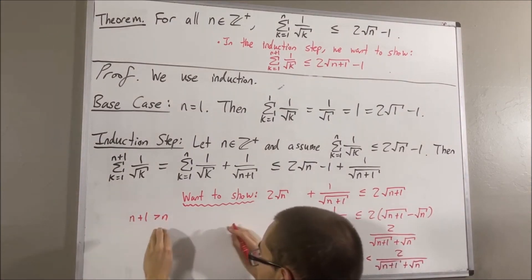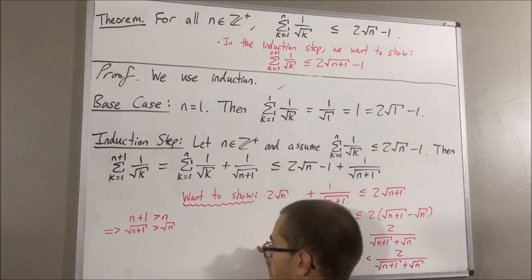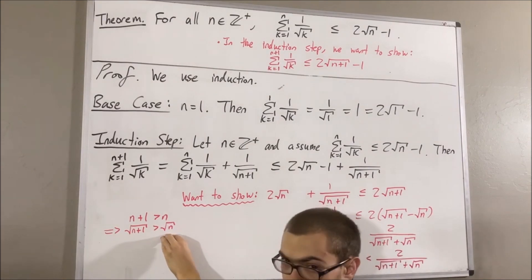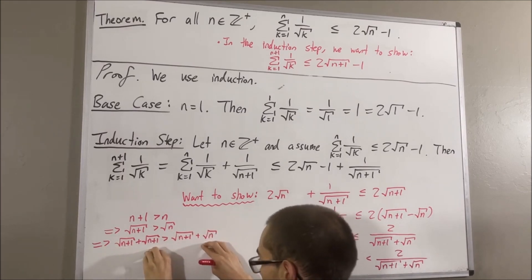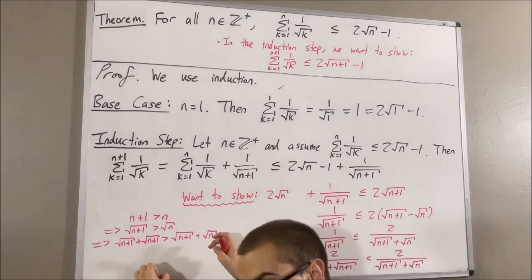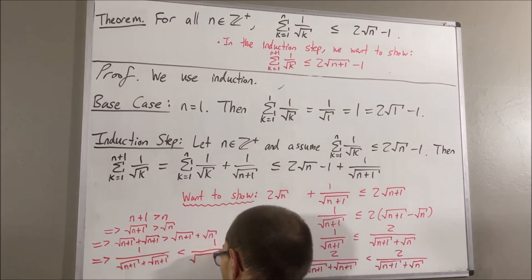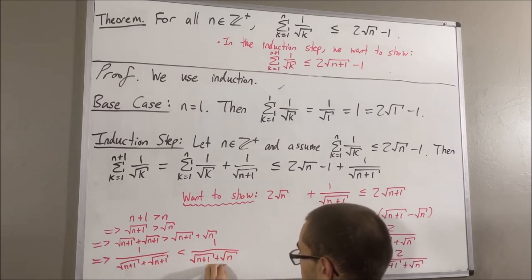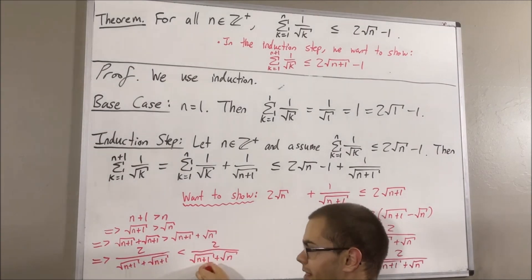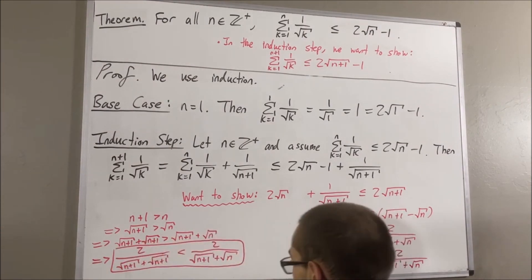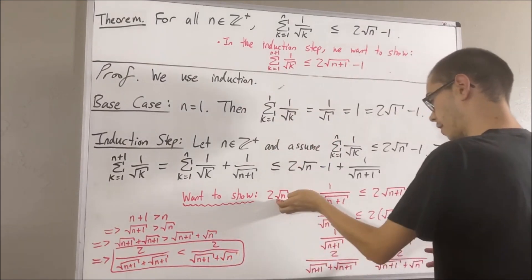Since both quantities are positive, if we take the square root of both sides of this inequality the sign remains the same. Then, since both sides are positive, if we take the reciprocal of both sides the inequality sign is reversed. Finally, if we multiply both sides by 2, the sign remains the same. So we can be sure that this inequality is true, and therefore we should be able to show that the main inequality holds.